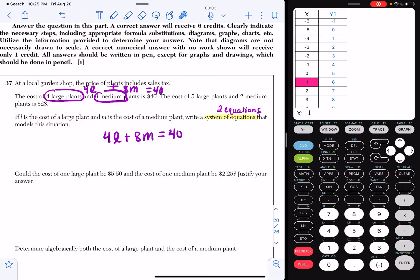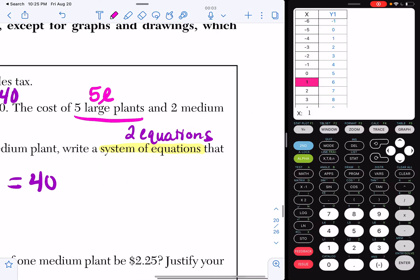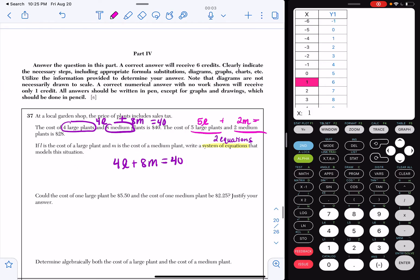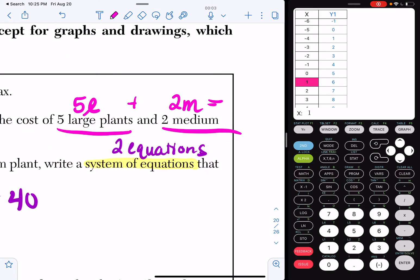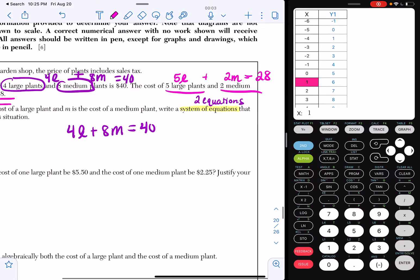Now, my second part of my system, the cost of five large plants and two medium plants is 28. So I can say 5L plus 2M is equal to 28. So now I'm just simply going to put those two equations on top of each other. And now I have my system. And boom, that gets you points.